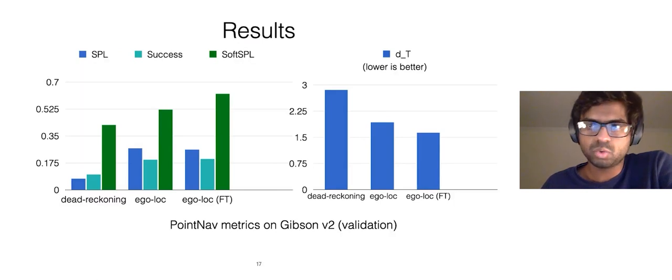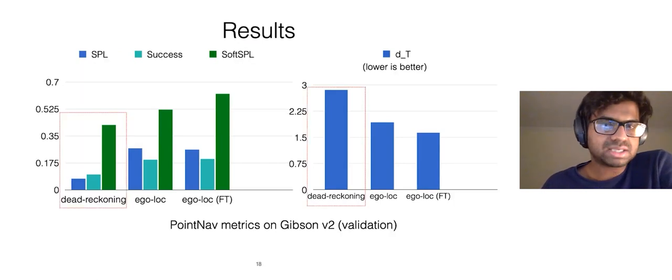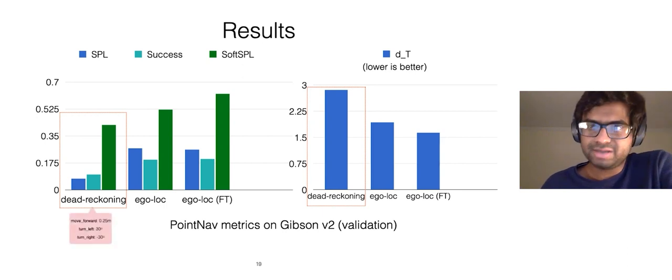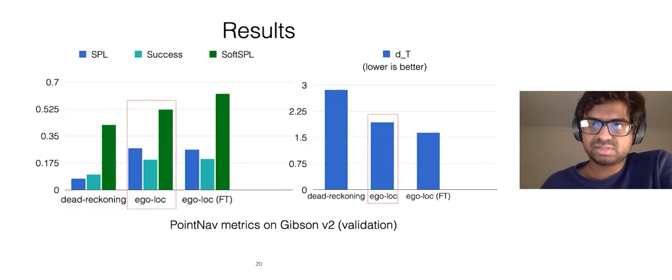We now take a look at some quantitative results. As a competitive baseline, we compare against an approach called dead reckoning. Dead reckoning derives ego motion estimates via a static lookup table mapping actions to odometry estimates and does not involve any learning for estimating odometry. We present results for our approach under two settings. In the first setting, during evaluation, we take our pre-trained odometry model and pair it with an agent policy that's trained with ground truth GPS and compass.